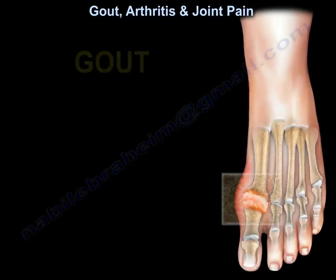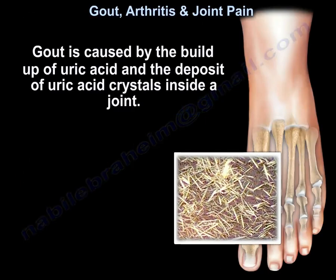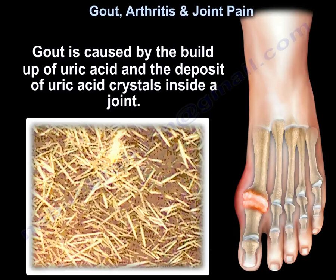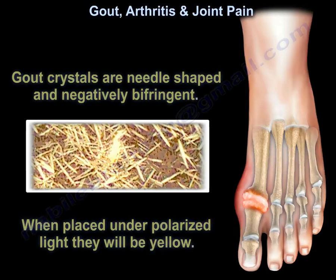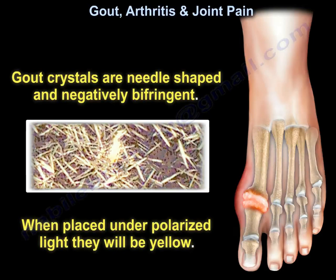Gout is caused by the buildup of uric acid and the deposit of uric acid crystals inside the joint. The best test to diagnose gout is with a joint fluid analysis. Gout crystals are needle-shaped and negatively birefringent. When placed under polarized light, they will appear yellow.